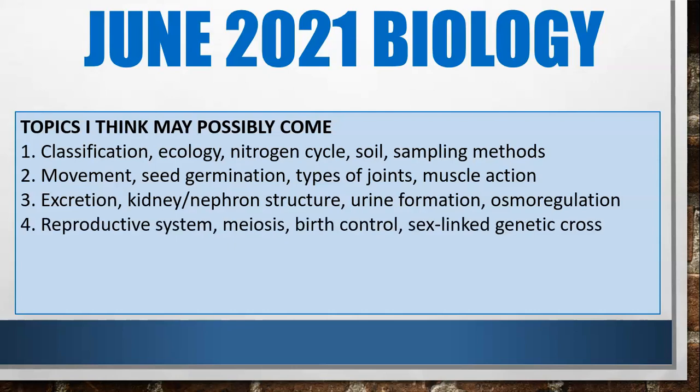Fourthly, the reproductive system — either male or female, something about meiosis. They asked about the process of mitosis in the January paper, so possibly they may bring in something about meiosis if they bring anything about cell division. And then birth control and possibly a sex-linked genetic cross related to the whole reproduction topic.